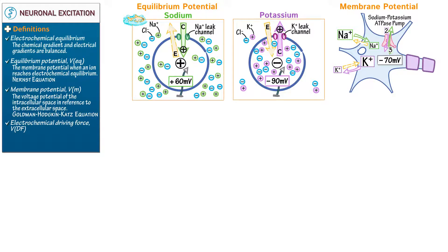Indicate that the sodium-potassium ATPase pump requires energy in the form of ATP because it's an active transporter. Lastly, let's include chloride. Show that chloride has a high extracellular concentration and a low intracellular concentration — a ratio of roughly 11 to 1 — with a concentration gradient directed into the cell body and an opposing electrostatic gradient. Show that chloride has an equilibrium potential of roughly negative 80 millivolts, which is fairly close to the membrane potential itself.